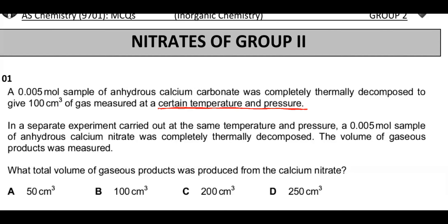In a separate experiment carried out at the same temperature and pressure, a 0.005 mol sample of anhydrous calcium nitrate was completely thermally decomposed and the volume of gaseous products was measured. Because the temperature and pressure are not specified as RTP, we cannot use 24,000 cm³ per mole — that does not apply here.